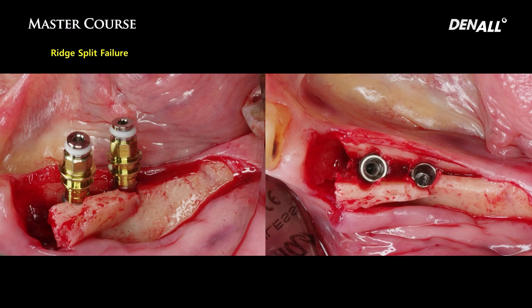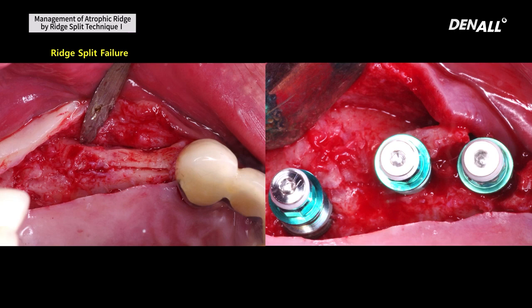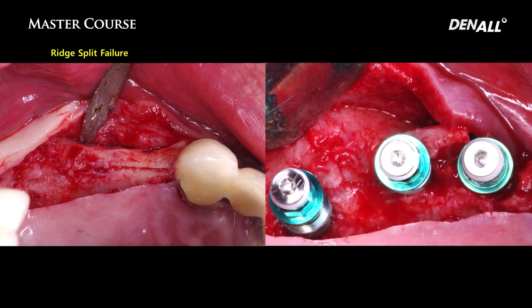In one case, the cortical bone was too thick — it did not split but fractured. In another completely different situation, the cortical bone was too thin and tearing occurred rather than splitting. In order to minimize these various complications in doing ridge split, tools were developed and a kit called the asset kit was developed, designed to make ridge split easier.